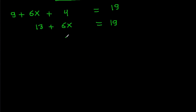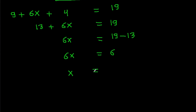So 6X equals 19 minus 13, and 6X equals 6. Therefore X equals 6 over 6, which is 1.